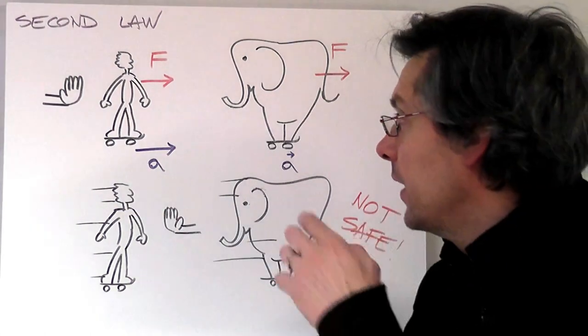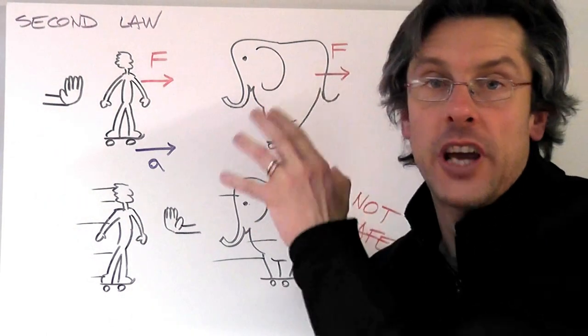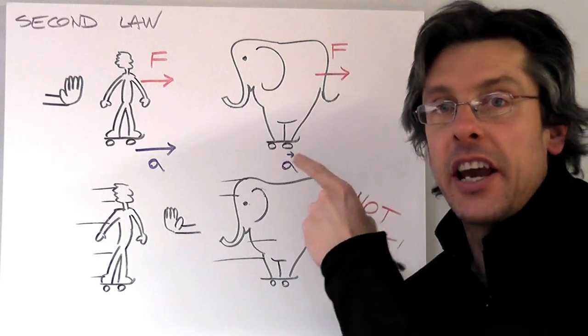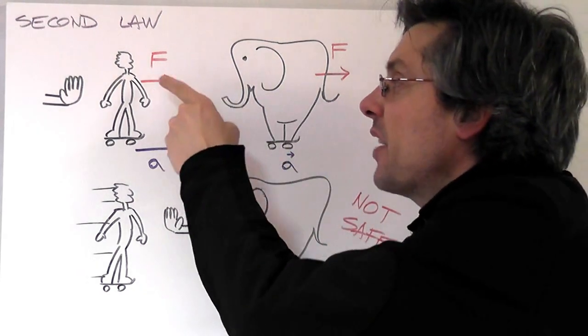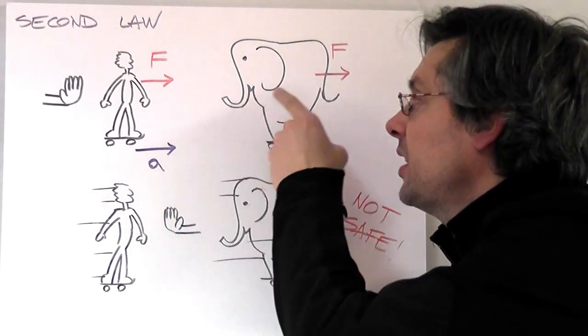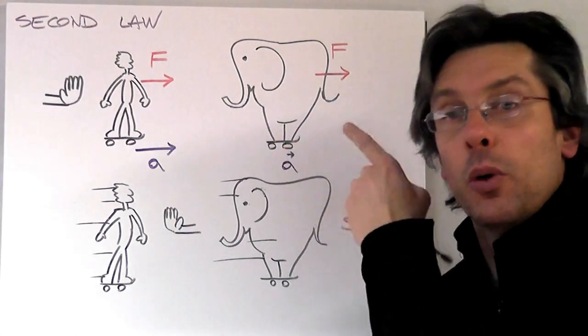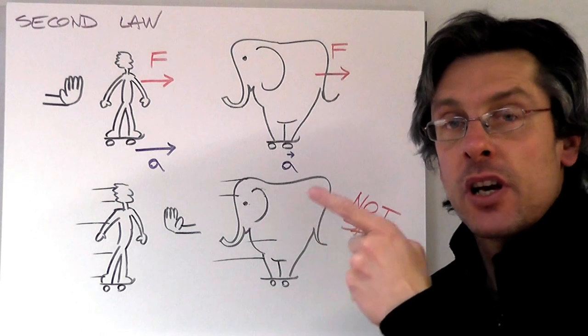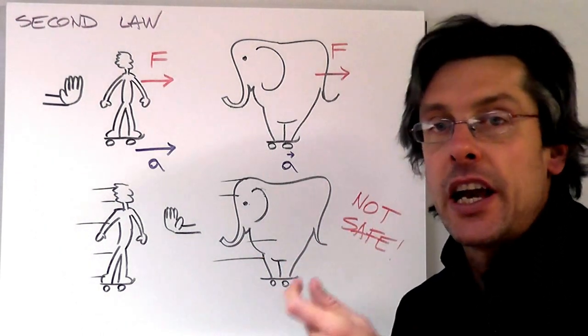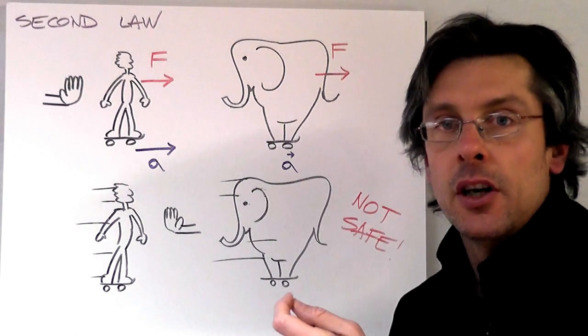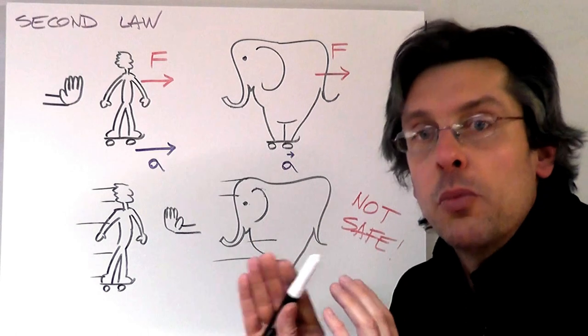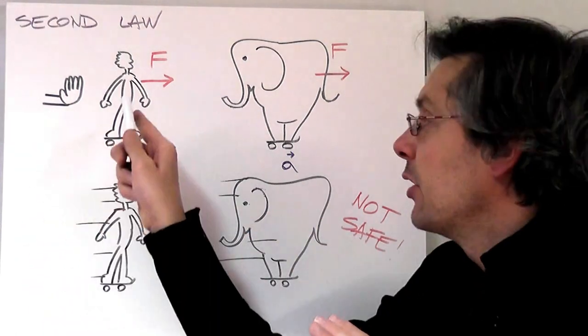On the other hand, if you want to push Eddie the Elephant, who also loves going on a skateboard, if you apply exactly the same force it's quite easy to see that Eddie the Elephant will experience a much smaller acceleration, much smaller change of speed. So if you apply the same force at the end you will move much slower than your friend.